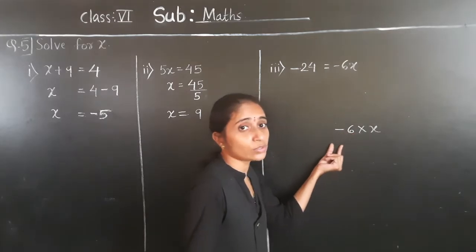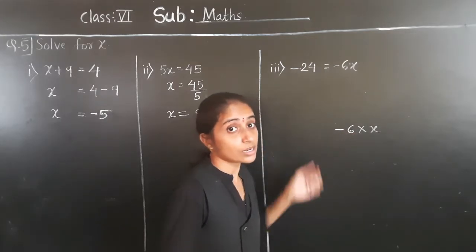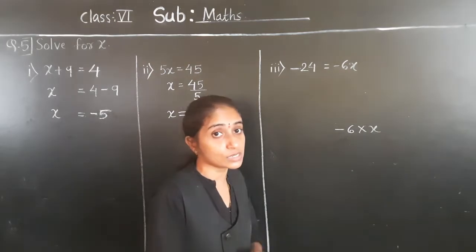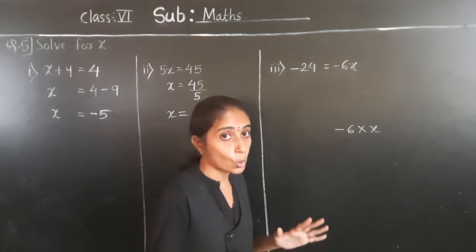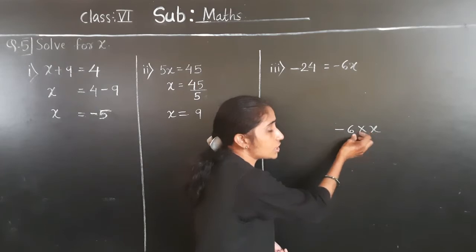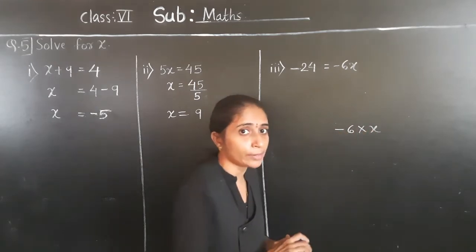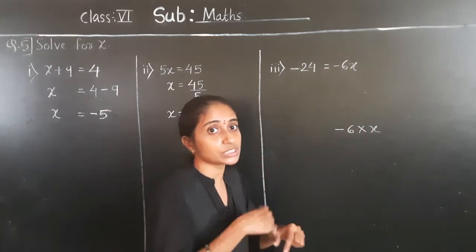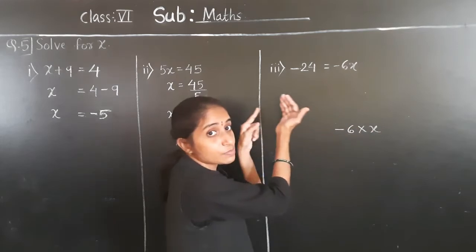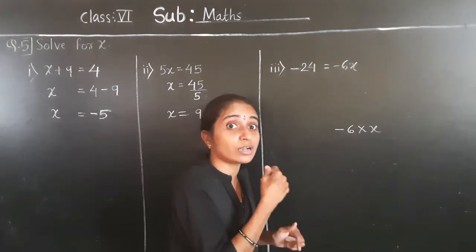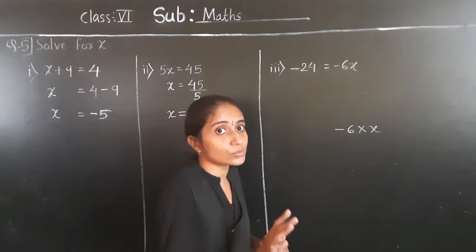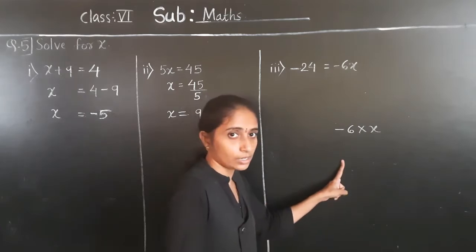We are going to transfer this 6 to the other side. Now you might say minus 6 will become plus 6 — but no. The operation between minus 6 and x is multiplication, and when we transfer it, it will become division. We do not change its sign in that case.